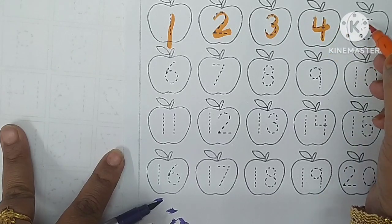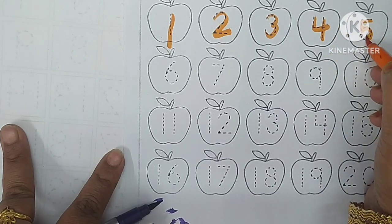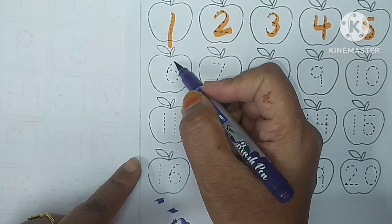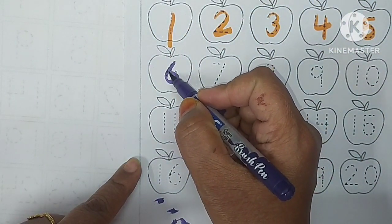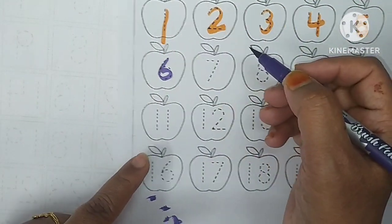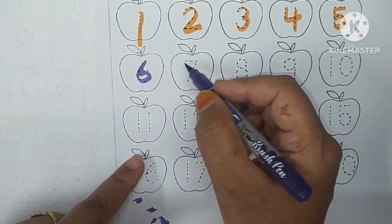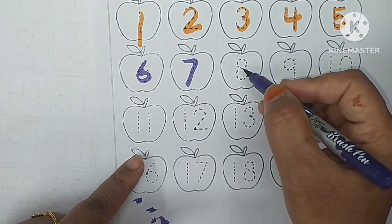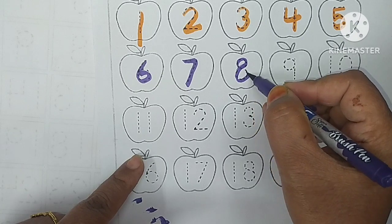Four - F-O-U-R, four. Five - F-I-V-E, five. Six, purple color - S-I-X, six. Seven, CV and seven. Eight - E-I-G-H-T, eight. Nine - N-I-N-E, nine.